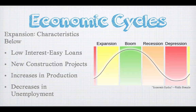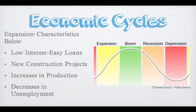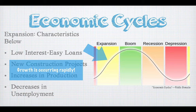Expansion characteristics are simply low interest rates — it's easy to get money. You're starting to see more new construction projects, not just remodeling or improving, but new construction projects. Places are growing. You see increases in production; we're outputting more goods. And finally, you see a decrease in unemployment. To do the construction and to increase production, we're hiring new workers. Growth is starting to occur and it's starting to occur pretty rapidly.